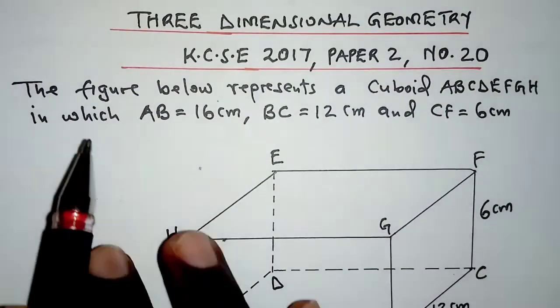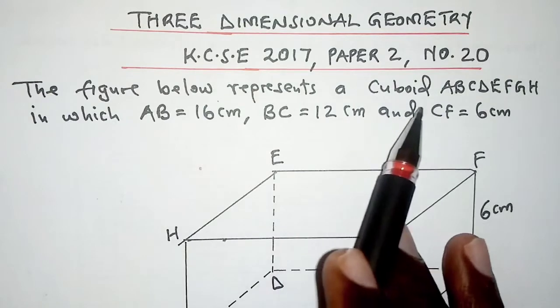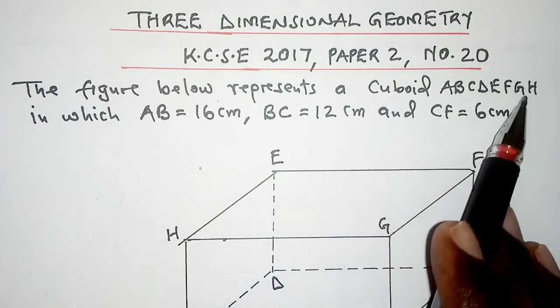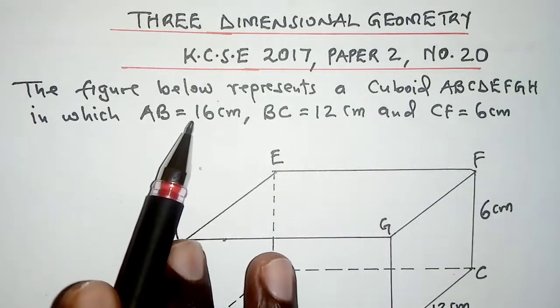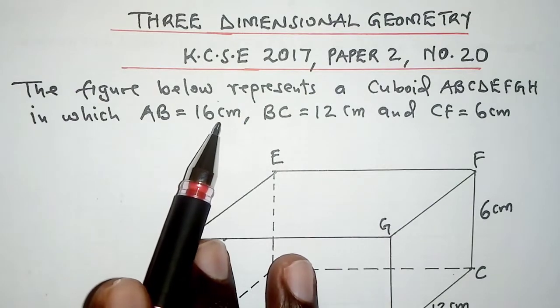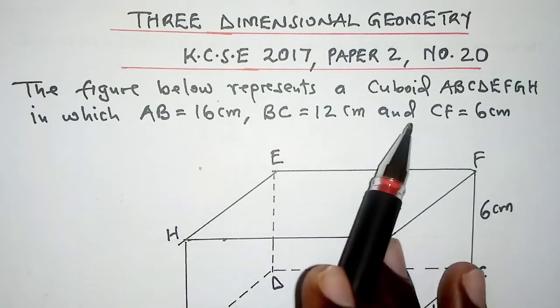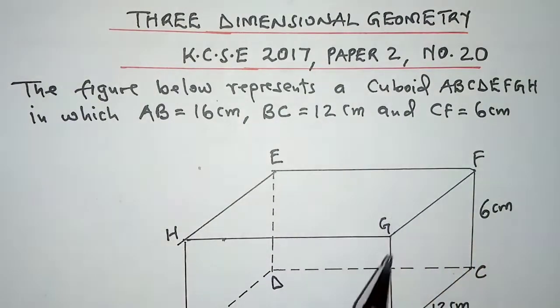The question reads: the figure below represents a cuboid ABCDEFGH in which AB is 16 cm, BC is 12 cm, and CF is 6 cm.